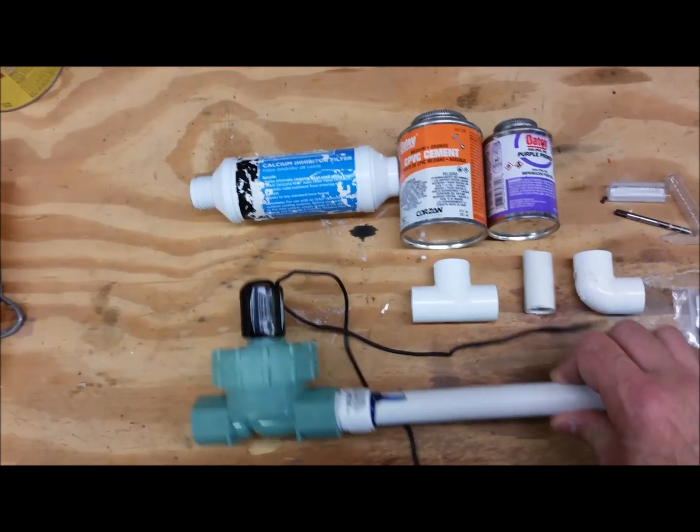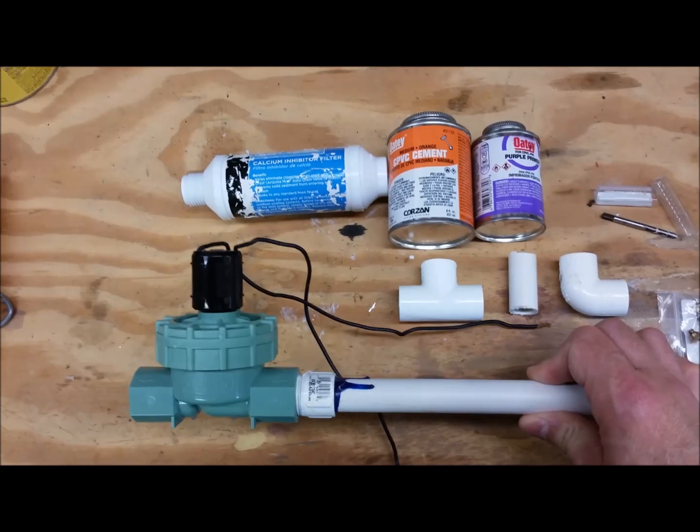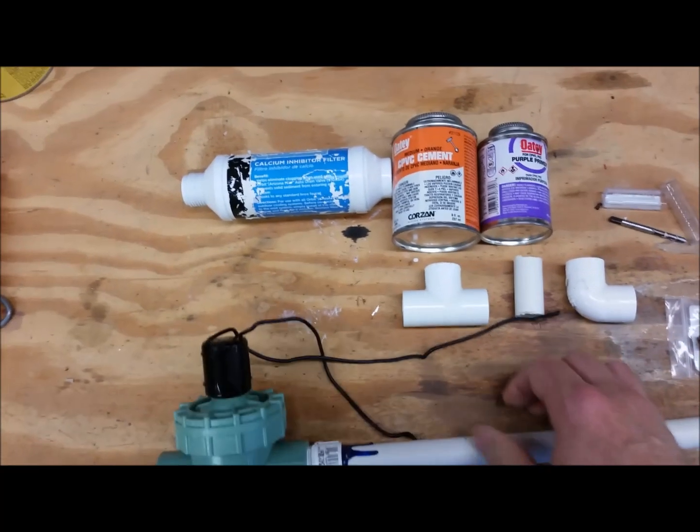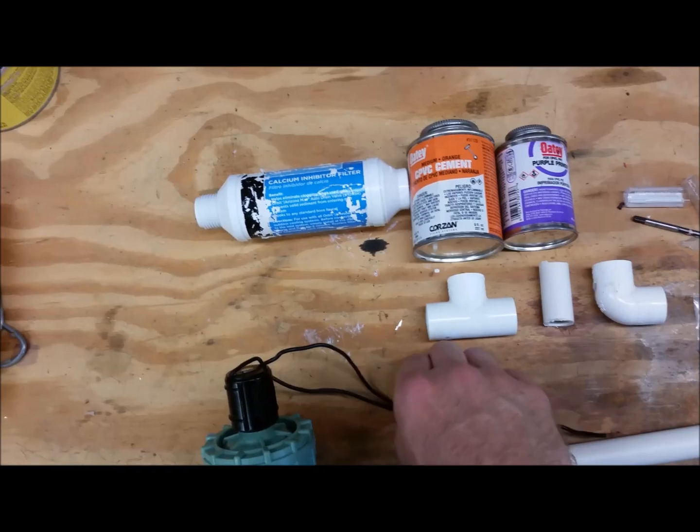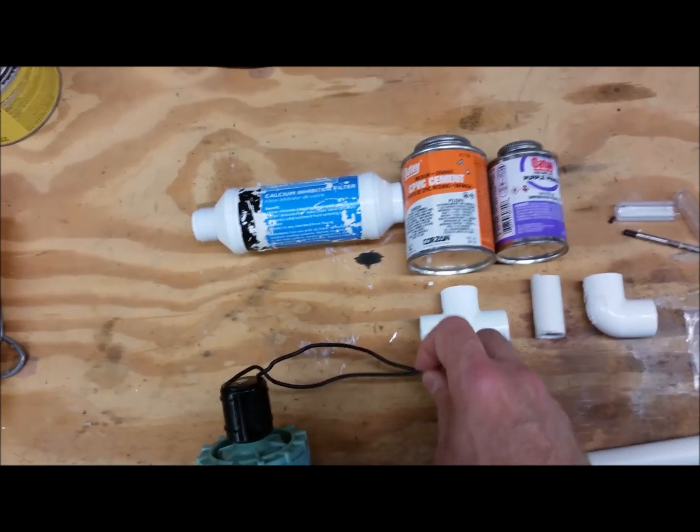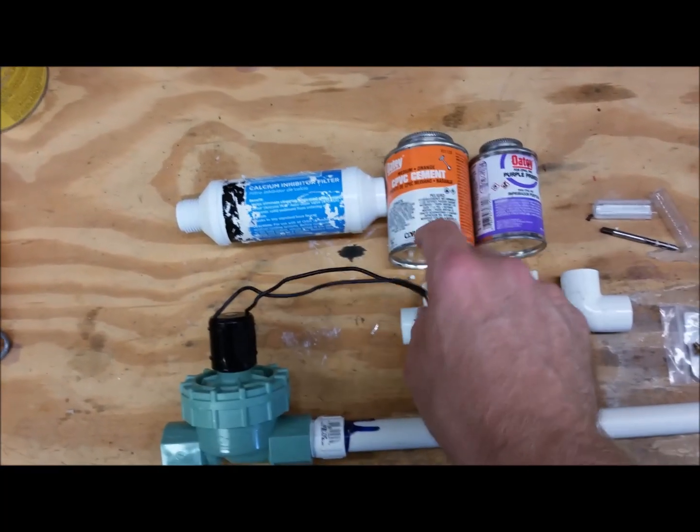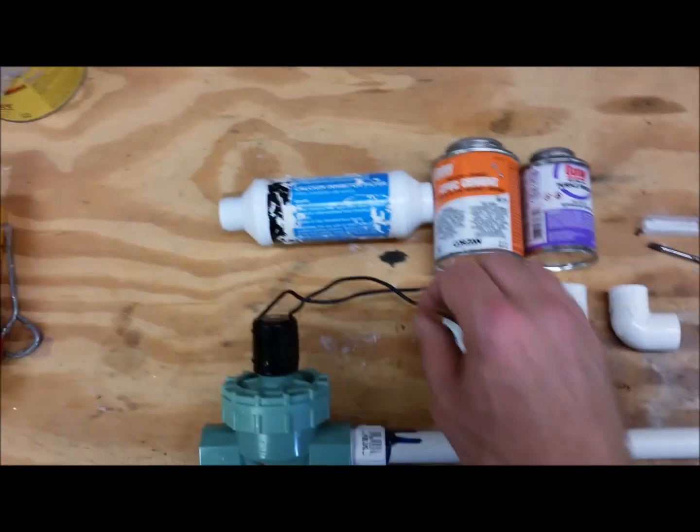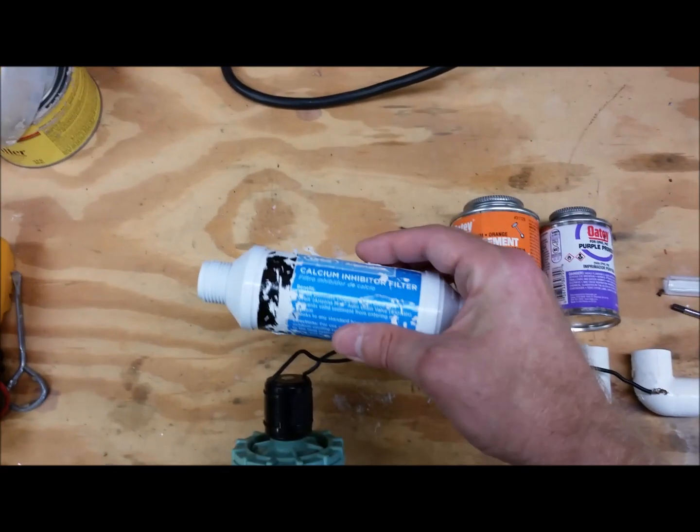So this is a solenoid or water sprinkling system valve. This works perfectly. It's between 24 to 26 volts to turn it on. This will wire in directly into your air conditioner, and this is the calcium filter if you need one of those for heavy water.